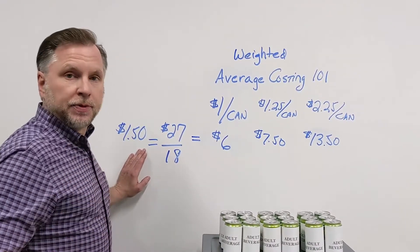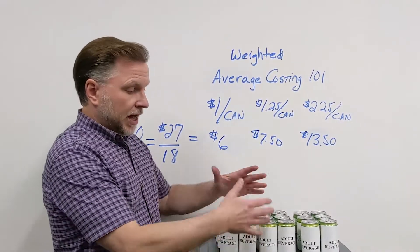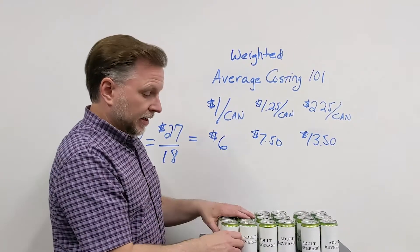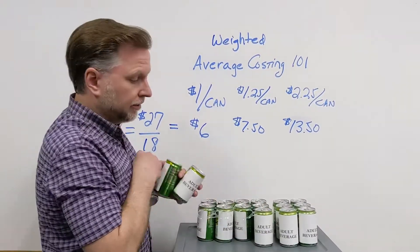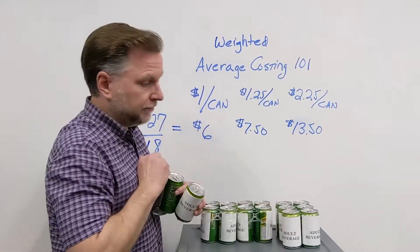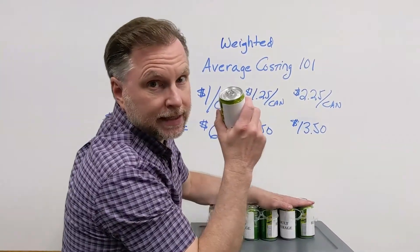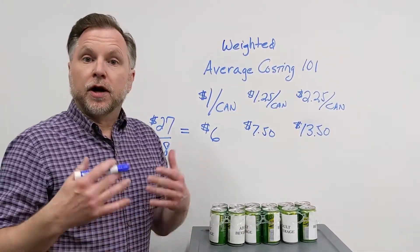So now we can start our operations. In fact, we sell six of these. They can come from anywhere. We're just selling six of these. We don't care whether they were the new stuff or the old stuff. Selling six of them. So now it comes time for our costing.